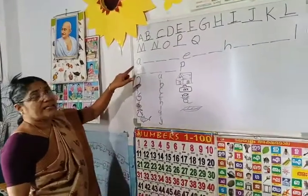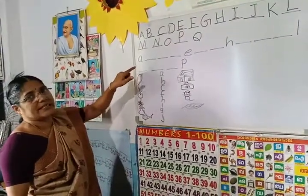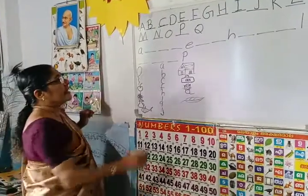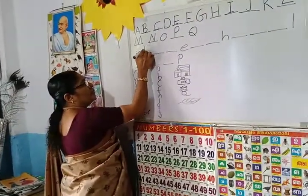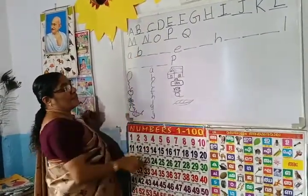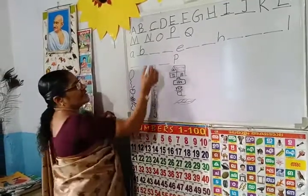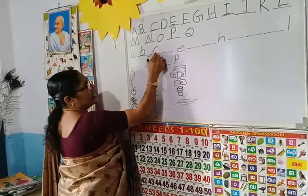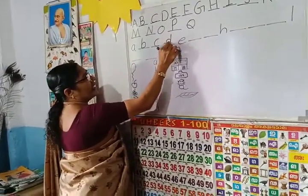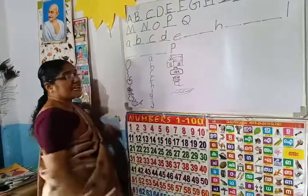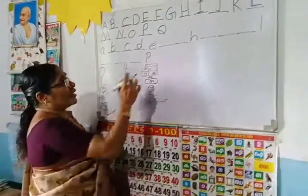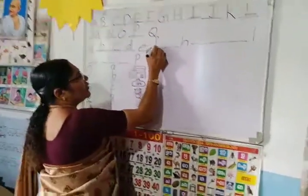Here, these are baby letters. Baby A. Then how to write — after B, C. C after? D. E is here, no need to write E. E after? F.